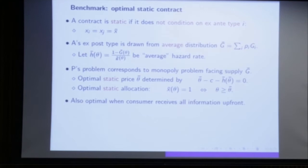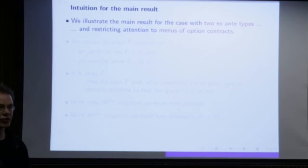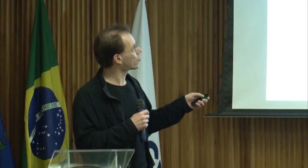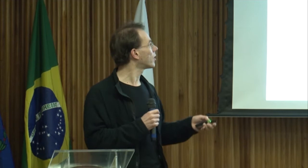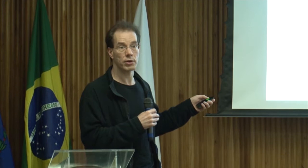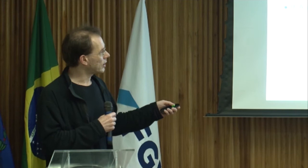Let me give an intuition for our result using two ex-ante types and restricting attention to menus of option contracts. An option contract is what the principal offers the agent: an upfront fee F, and then after learning theta, the agent can exercise his option to keep the good — to actually buy it — at exercise price theta-hat. So the agent pays F, observes theta, and then decides whether to exercise the option and pay theta-hat.